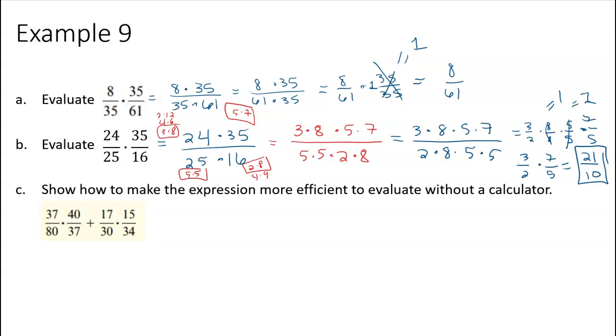So show how to make this expression more efficient to evaluate without a calculator. So what I'm going to do here is I'm going to work on this fraction right here, and I'm going to say, okay, that's the same as 37 times 40 over 37 times 80, right? I can reorganize it, and that is equal to 1. So this is the same as 40 over 80. But I could probably keep going with 40 over 80, right? So for 40 over 80, how could I rewrite 40? Well, 40, well, let's start with 80. 80, the biggest number that's similar, I could say 2 times 40. So this would be 1 times 40. So this is the same as 1 times 40 over 2 times 40. Well, that equals 1. So this fraction is 1 half.